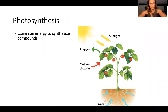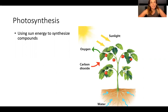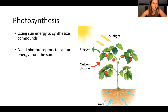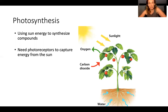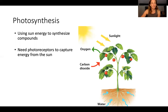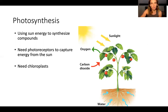Before we go there, let's talk about photosynthesis — a quick recap, probably elementary school level. What is photosynthesis? Organisms that can use sun energy to synthesize compounds — using sun to make food. To do this you need photoreceptors; you have to find a way to capture energy in photons and turn it into chemical energy. Light energy becomes chemical energy. That's the magic — what we haven't been able to replicate as humans. Plants and bacteria are really good at it, but to do this you need chloroplasts — that's where the magic happens.